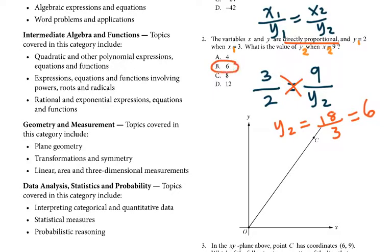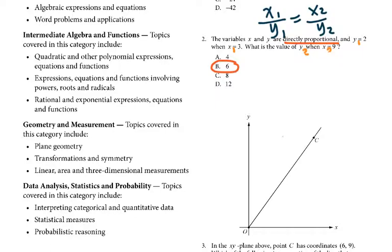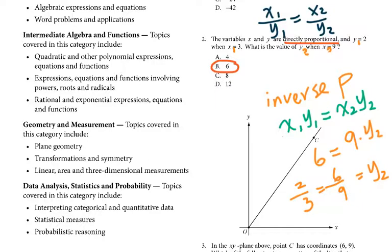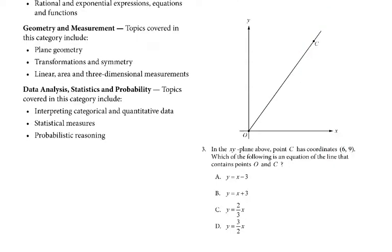So the answer is 6. In contrast to direct proportion, we have inverse proportion. For inverse proportion, you write x1 times y1 equals x2 times y2. So if it were inverse proportion, x1 times y1 equals 6, and 9 times y2 gives y2 equals 6 over 9, which reduces to 2 over 3. Be careful with these questions — check whether it is directly or inversely proportional.